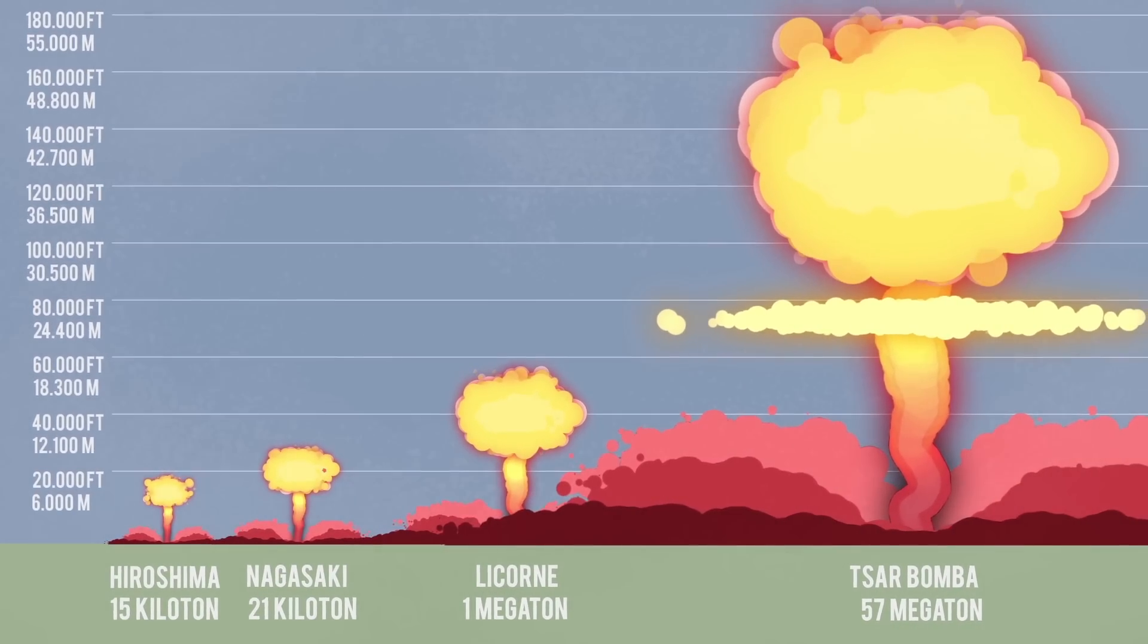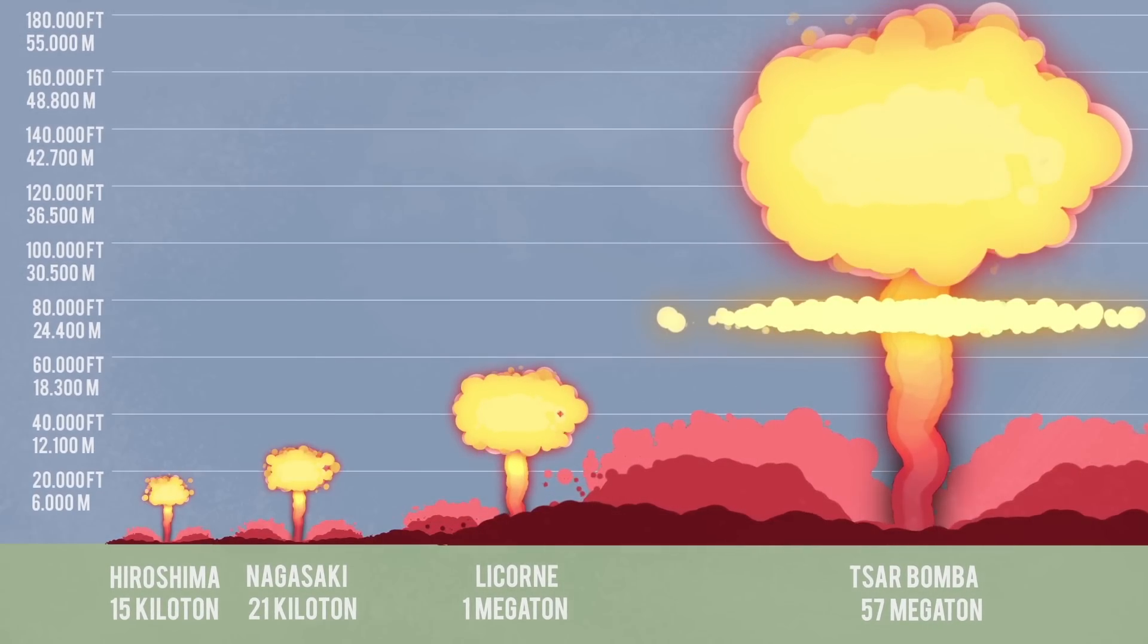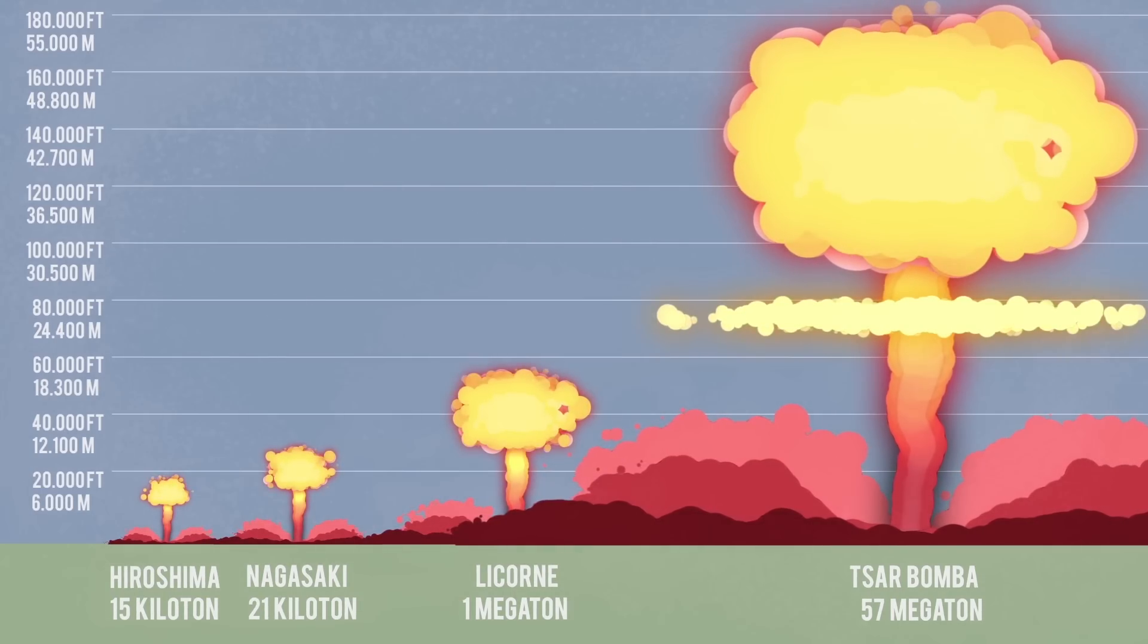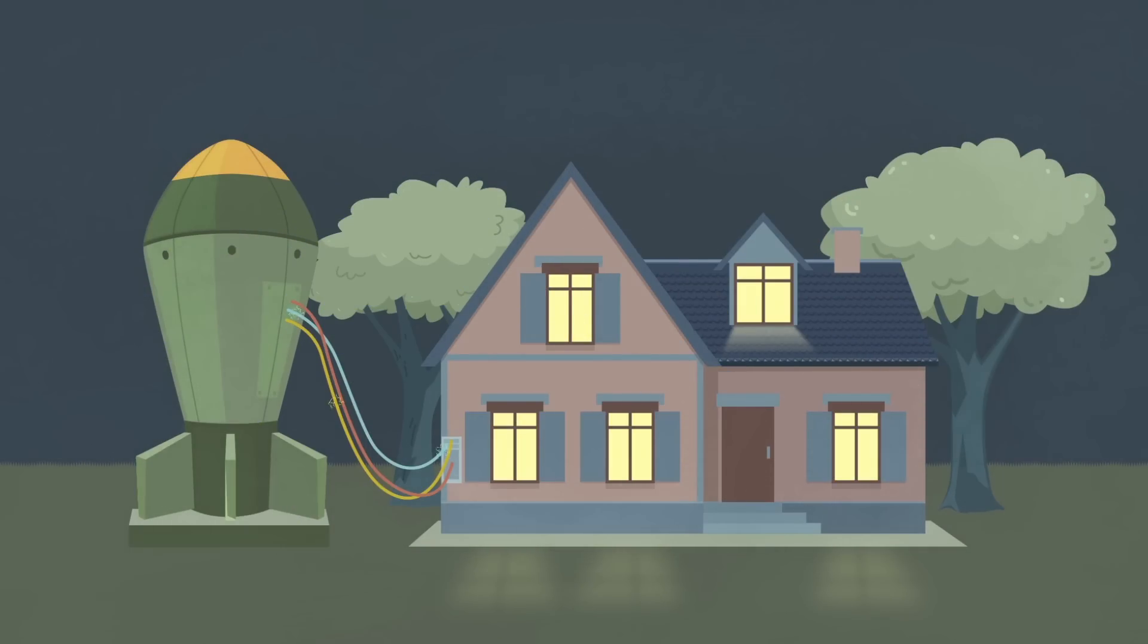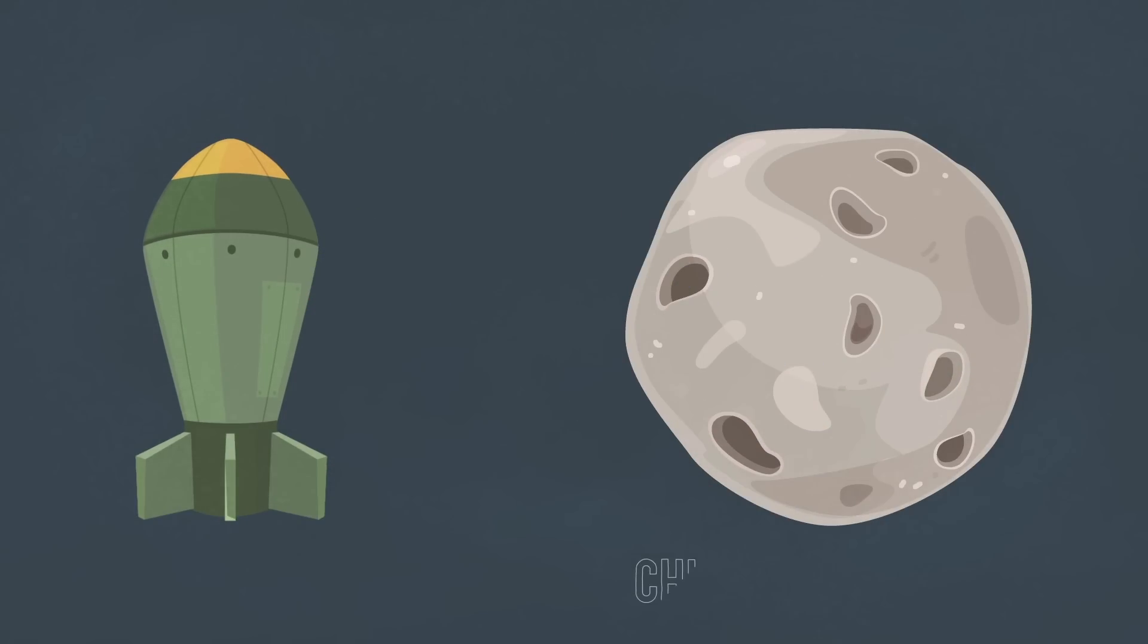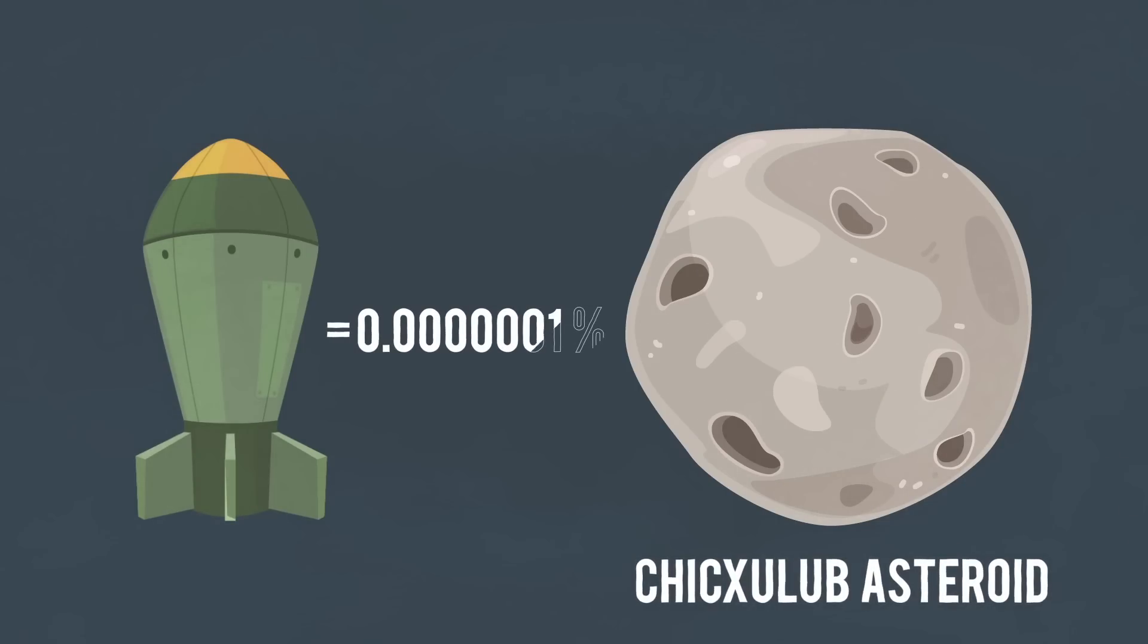As of today, the largest hydrogen bomb ever detonated was the Tsar Bomba that had a yield of 57 million tons of TNT. The energy produced by this bomb would be enough to power a household of six people for more than two million years. But even this explosion was just 0.0000001% as powerful as the asteroid that wiped out the dinosaurs.